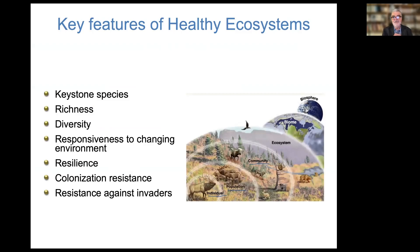Let me start out with a few key features of a healthy ecosystem — the 101 of ecosystem biology. Ecosystems are characterized by keystone species, richness, diversity, responsiveness to changing environments, resilience, colonization resistance, and resistance against invaders. All these are shared properties of healthy ecosystems, regardless of whether they're at the microbial level or the macro-biological level.